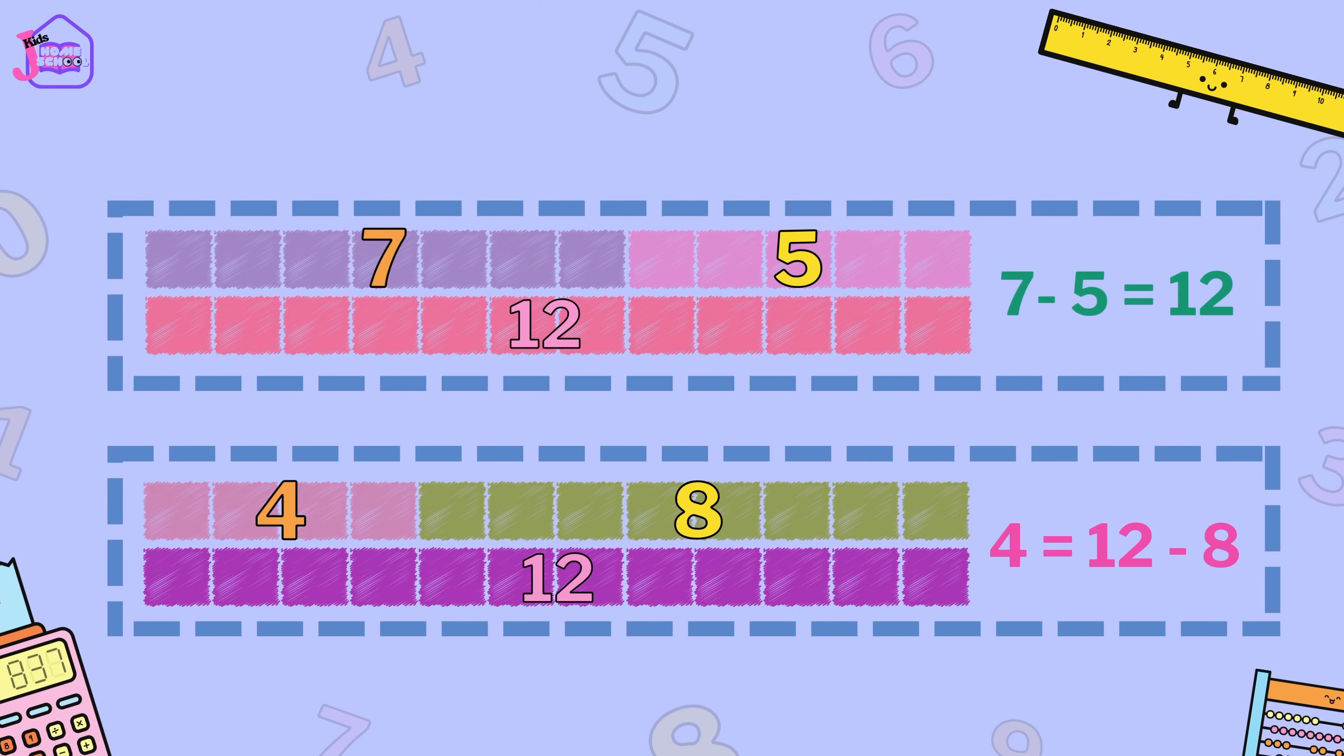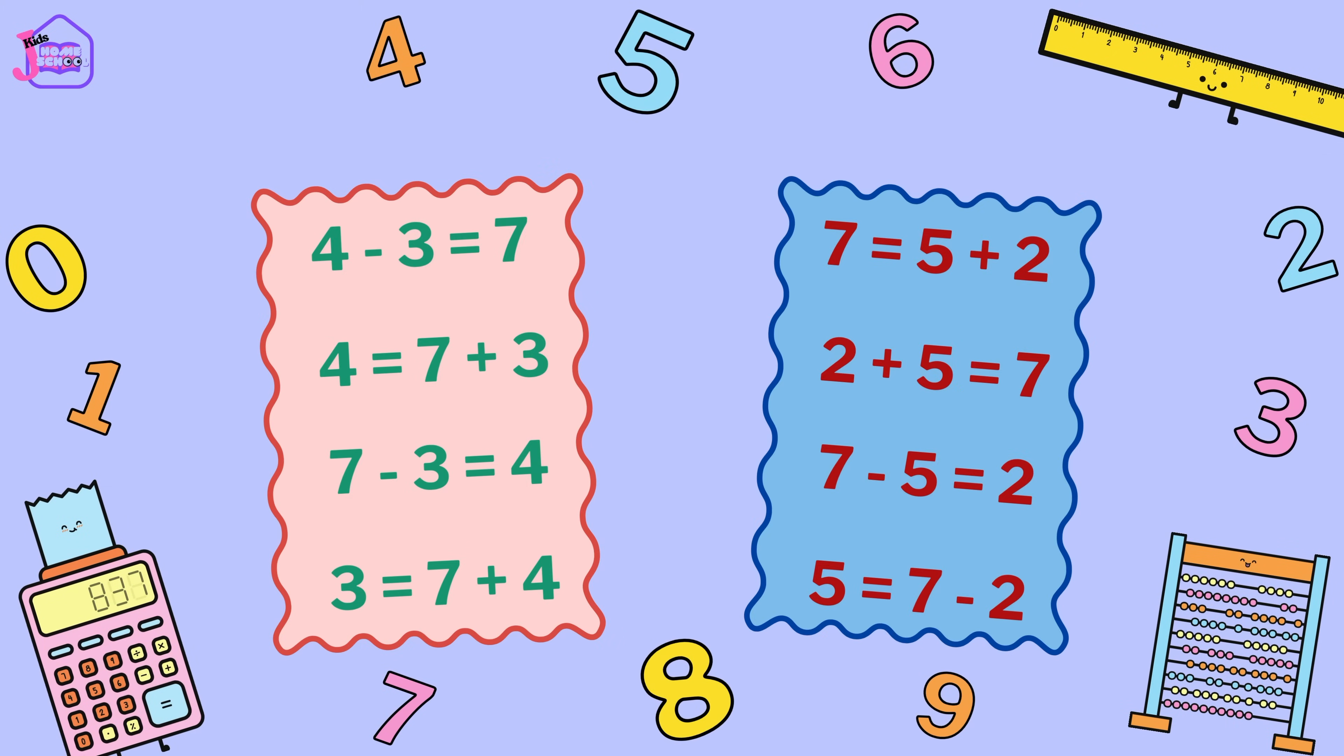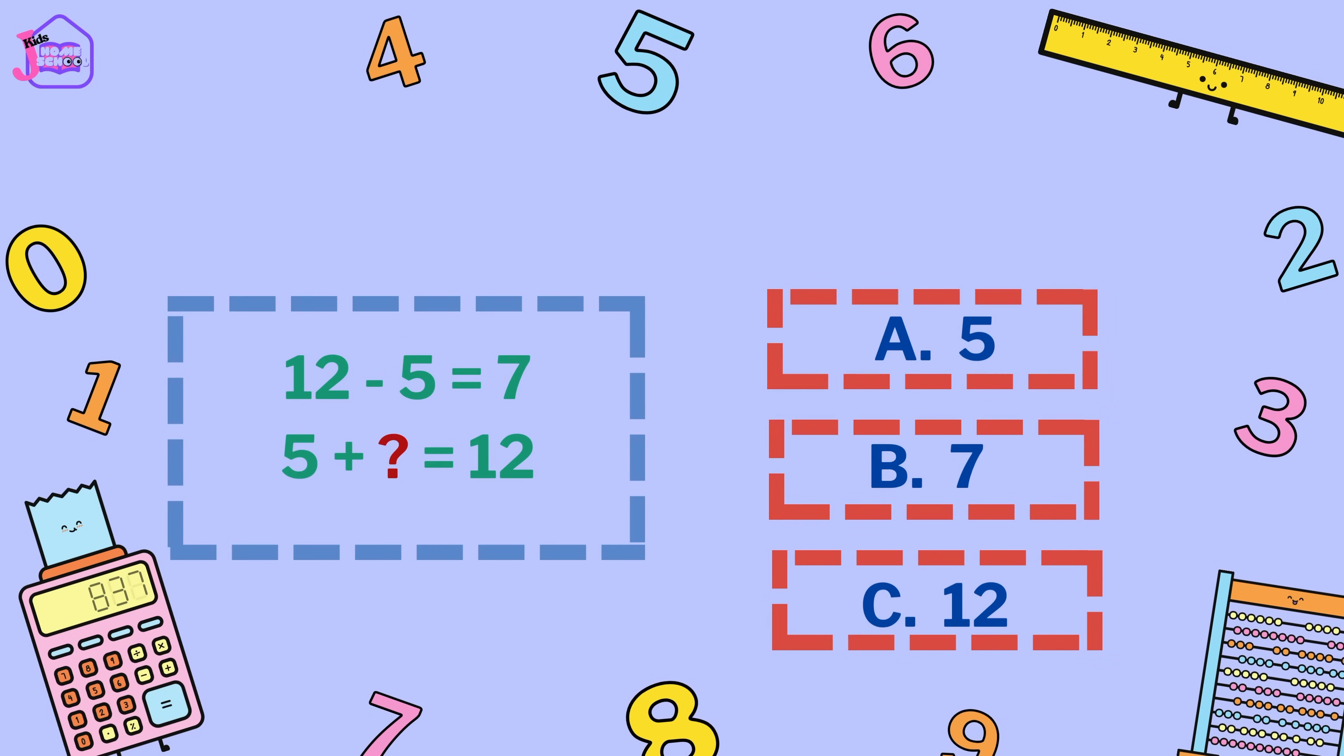Which bar model and number sentence is correct? Which fact family is correct? Which is the missing number from this number sentence?